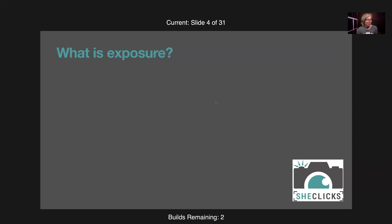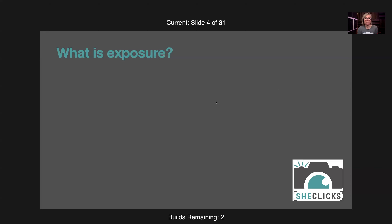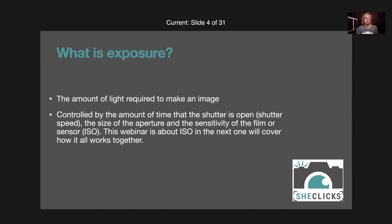ISO is part of exposure. Exposure is the amount of light it takes to form an image, and it's controlled by the amount of time the shutter is open — the shutter speed — and the size of the hole that light passes through to reach the sensor, which is the aperture.